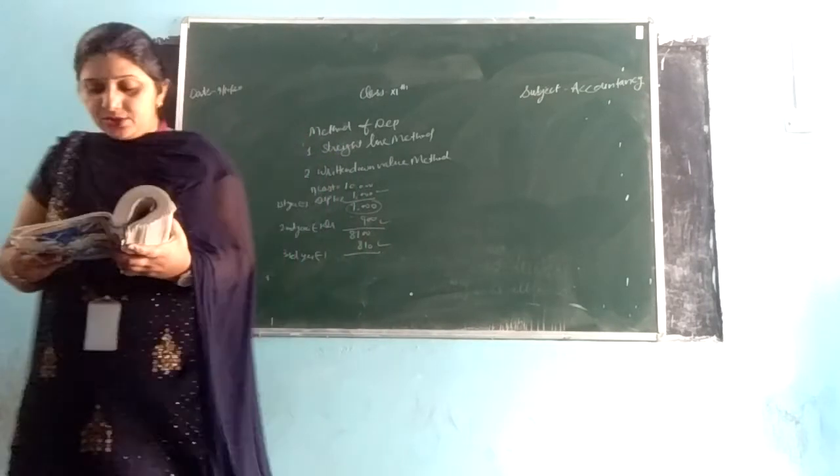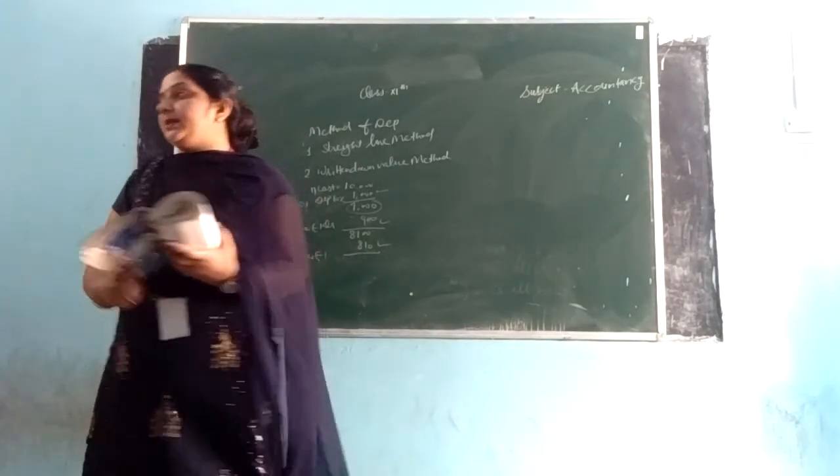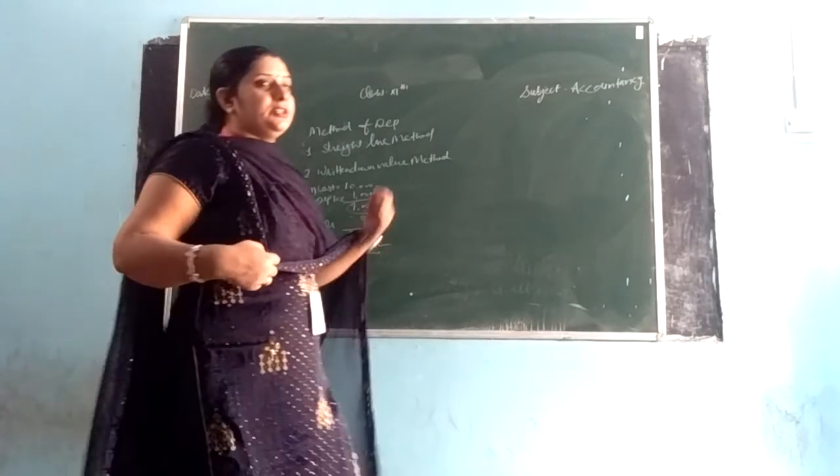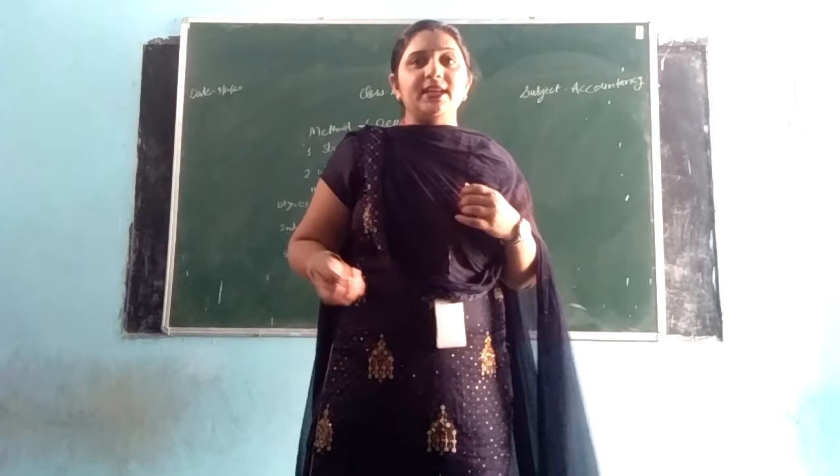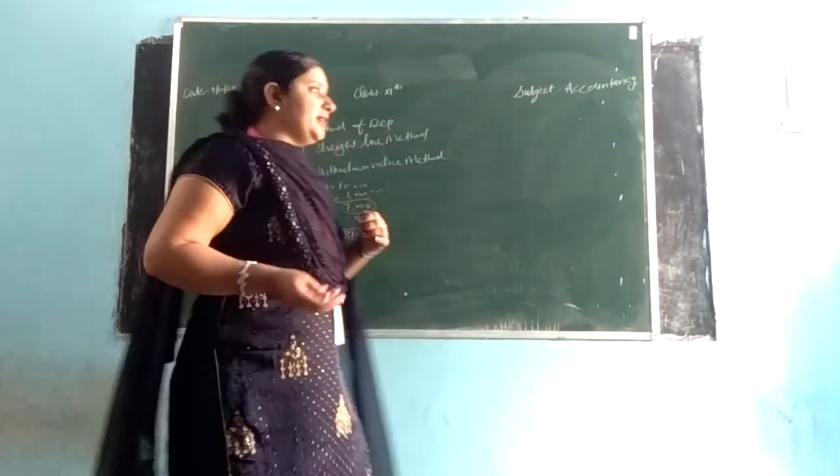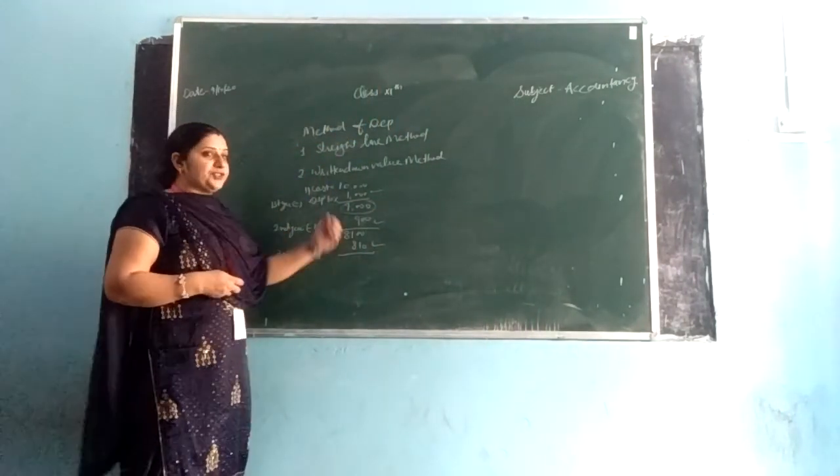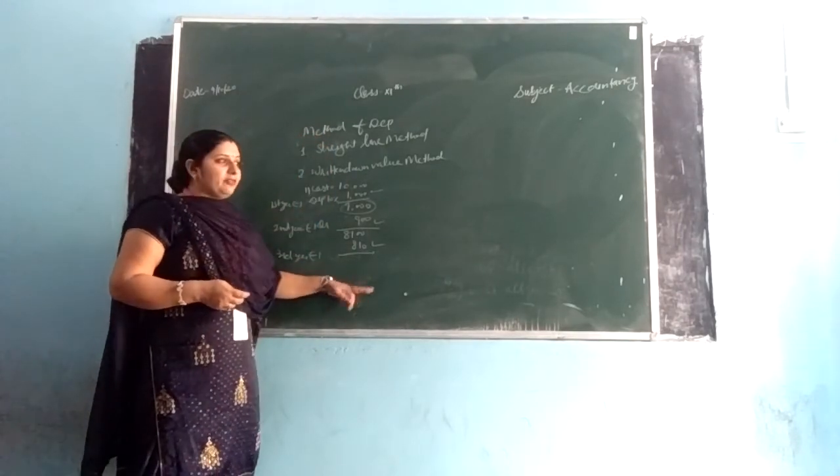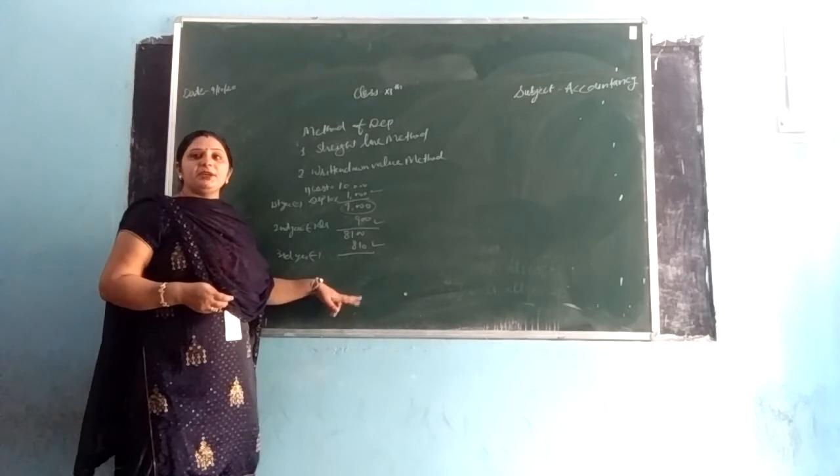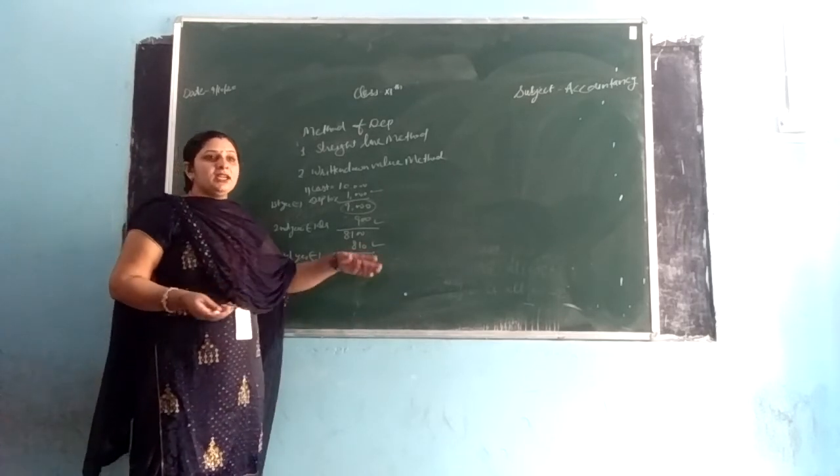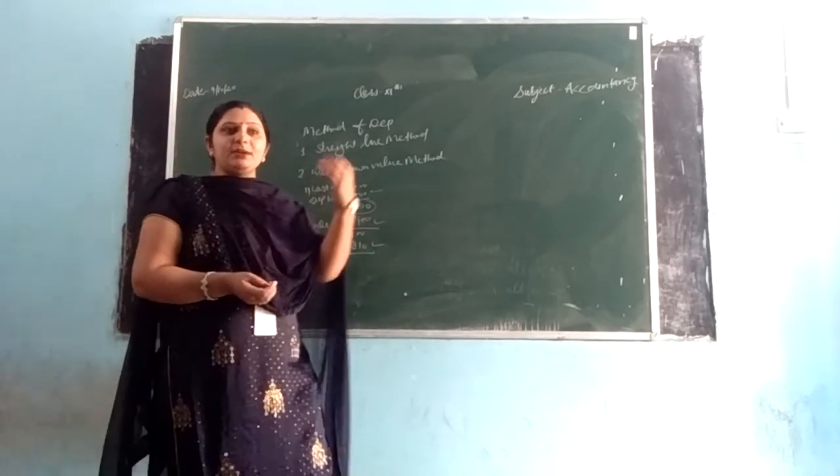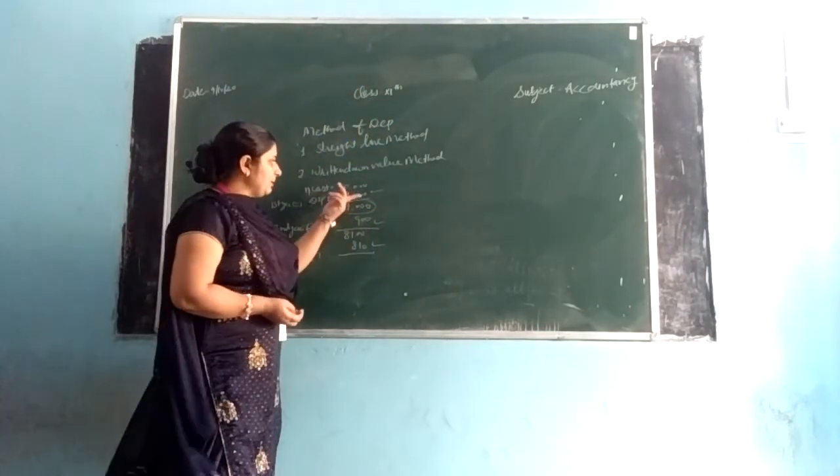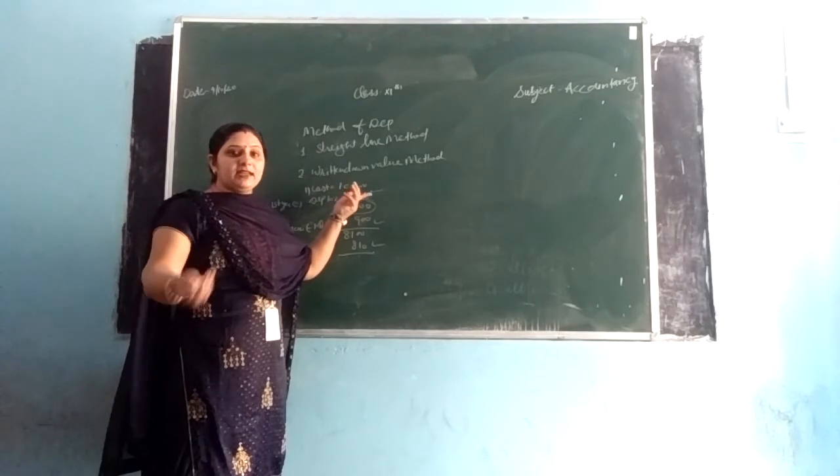Knowledge of original cost and up-to-date depreciation is not readily available. When we charge depreciation, the original cost and accumulated depreciation are not easily known. If there is depreciation for five years, with straight-line method we know it is 1,000 per year, so 5,000 total. But with written down method, it's not straightforward.